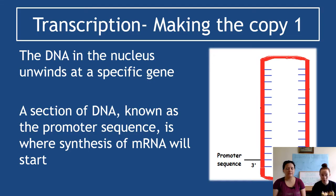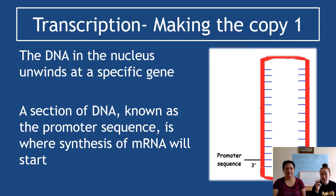The first thing that happens is that the DNA unwinds at the specific gene. It's not the whole DNA that unwinds — just that gene. At either end there's still a double helix; only that specific gene is open. A section of DNA known as a promoter sequence is the starter signal — this is where mRNA will start the process of protein synthesis.